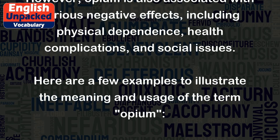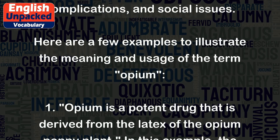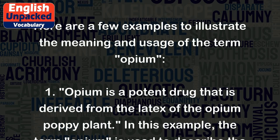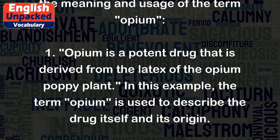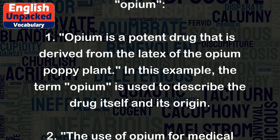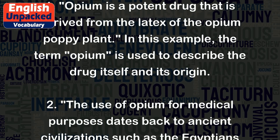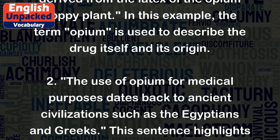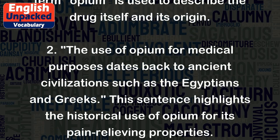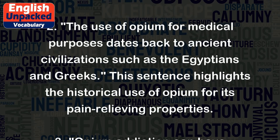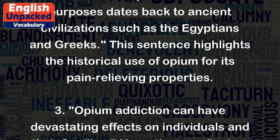Here are a few examples to illustrate the meaning and usage of the term opium. 1. Opium is a potent drug that is derived from the latex of the opium poppy plant — this example describes the drug itself and its origin. 2. The use of opium for medical purposes dates back to ancient civilizations such as the Egyptians and Greeks, highlighting the historical use of opium for its pain-relieving properties.